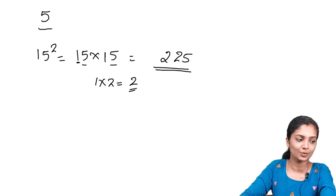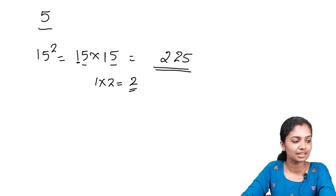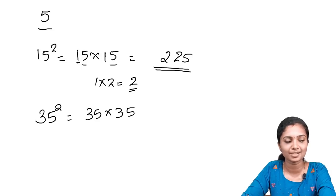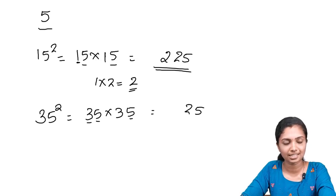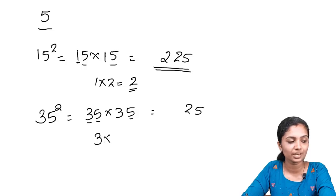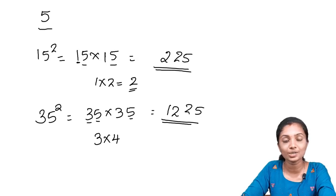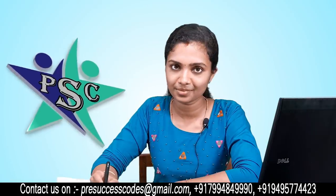Let's take the number 35 squared. 5 into 5 is 25. The number before 5 is 3. 3 into the next counting number, which is 4. So 3 into 4 is 12. So our answer is 1225.